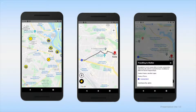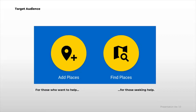The user can also travel to the location and will be provided by the app with modes of travel and routing directions. All of these POIs are contributed by the community of users. Add Places is for those who want to provide help by contributing information, and Find Places is for those seeking help or refuge.